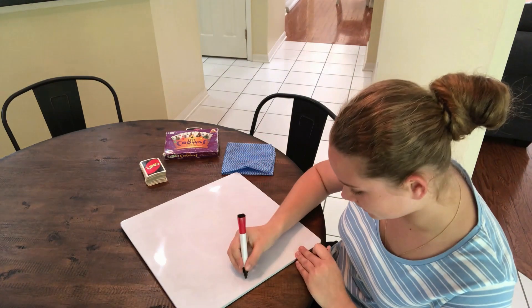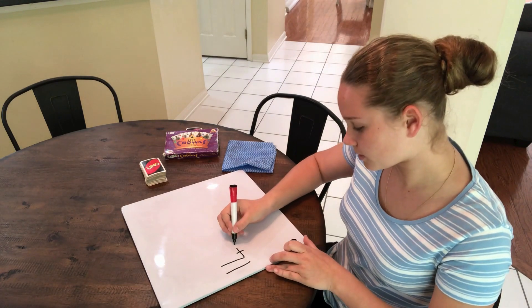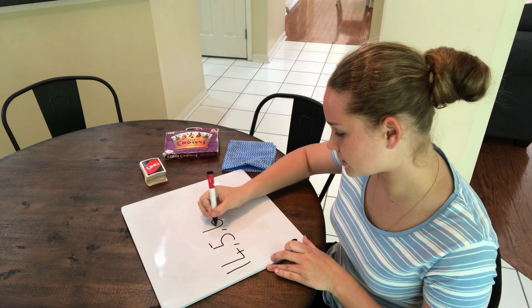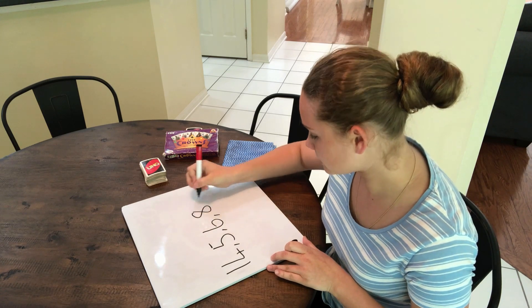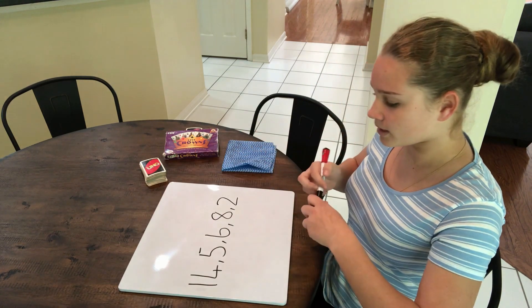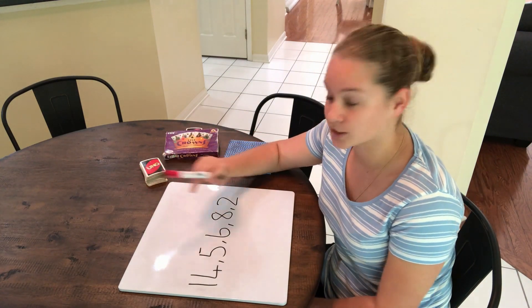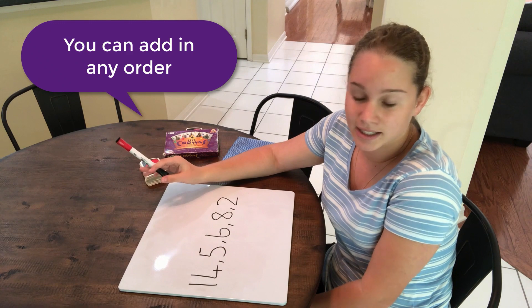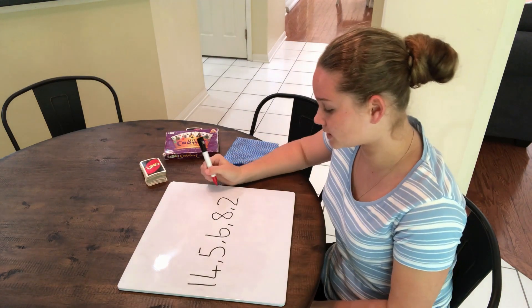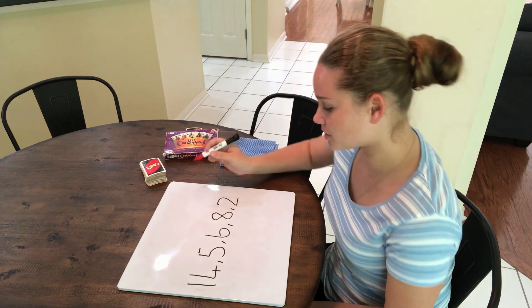This time I'll have 14, 5, 6, 8, and 2. Now with adding you don't have to add left to right or right to left. You can do it in any order — it doesn't matter. Just find groups that help you add. So I'm actually going to start adding from the end because I know 8 and 2 is 10.